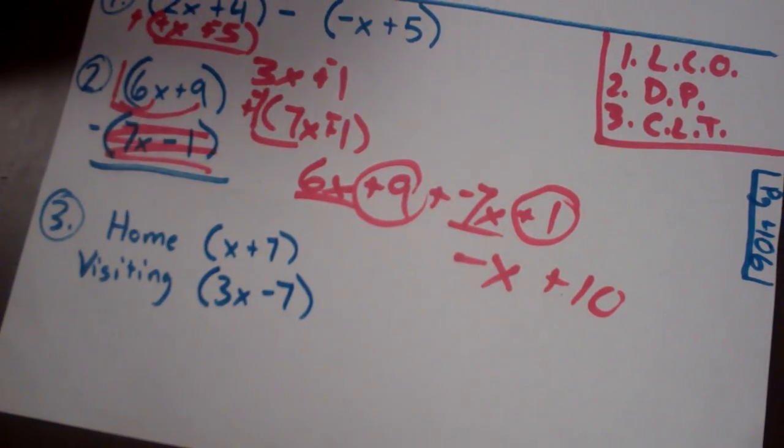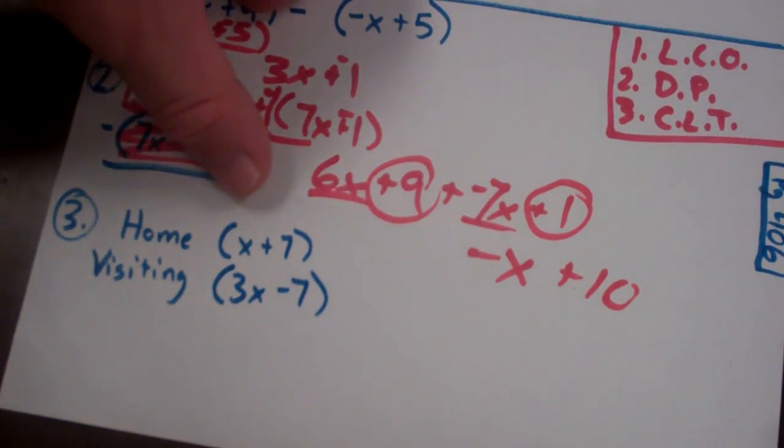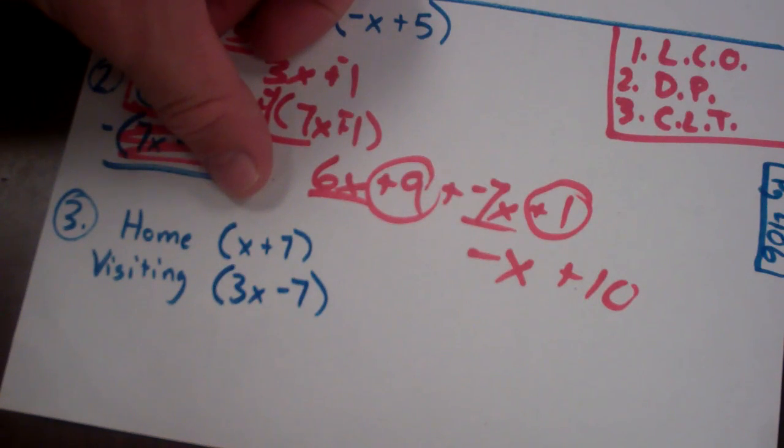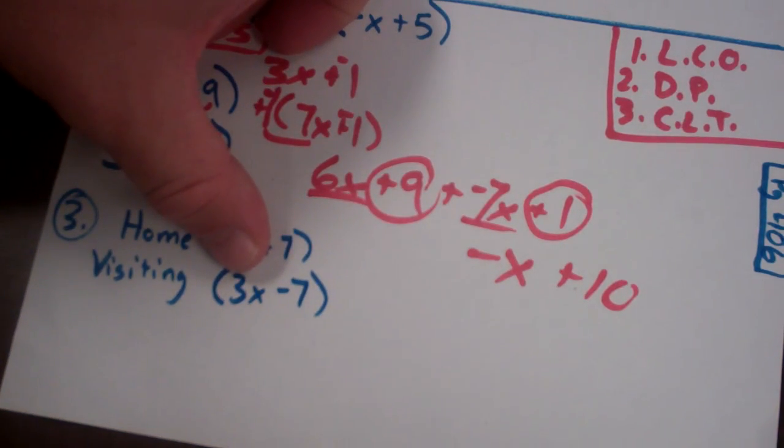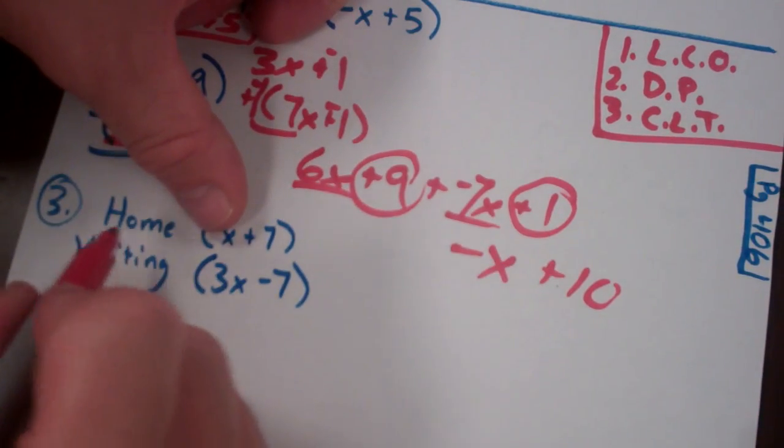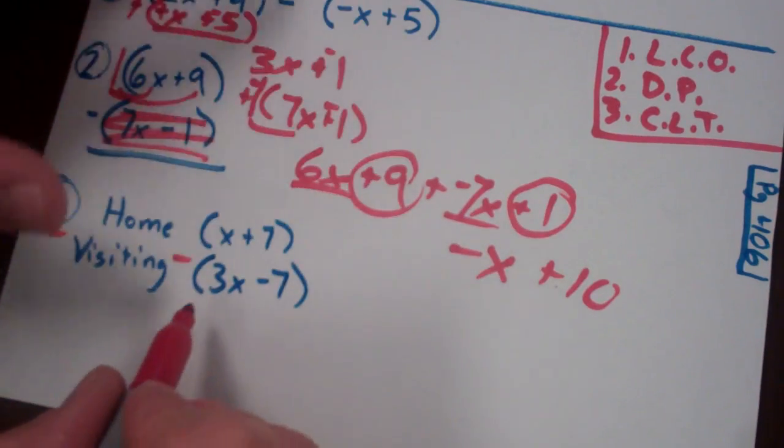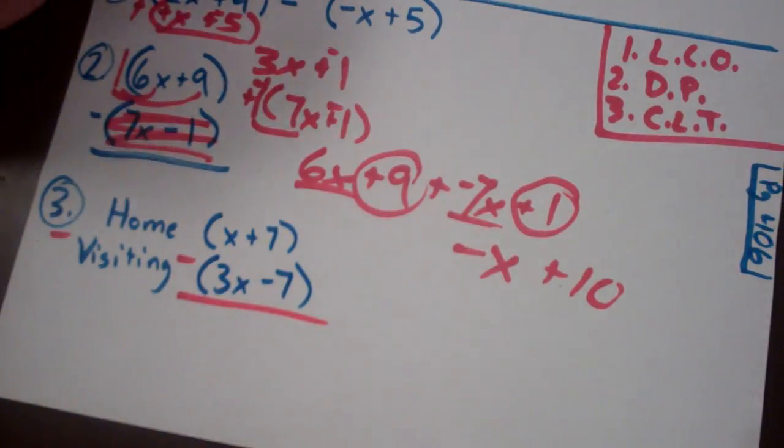Number 3 says the number of runs scored by the home team at a baseball game is represented by the quantity x plus 7. The number of runs scored by the visiting team is represented by the quantity 3x minus 7. Write an expression to find how many more runs the home team scored than the visiting team. So I need to be doing home minus visiting. Home minus visiting to find the difference.